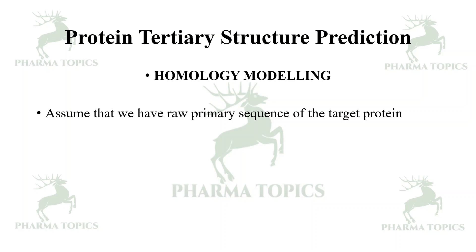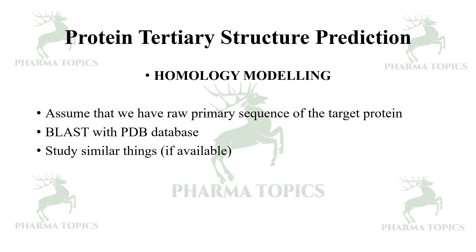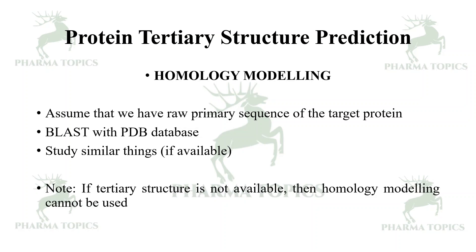Assume that we have a raw primary sequence of a target protein. You can do a BLAST with the PDB database to find proteins which are similar to this — this is called studying similar things. If there is another sequence similar to yours where the protein is already deposited, that is called homology modeling. Note: if the tertiary structure is not available, then homology modeling cannot be used.